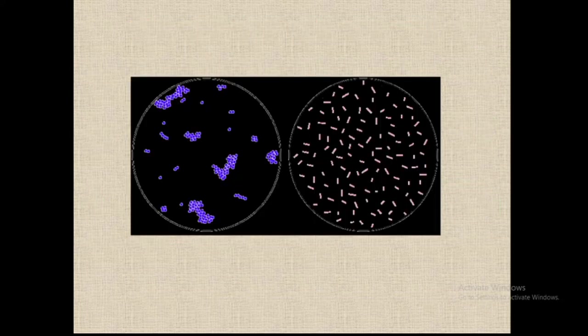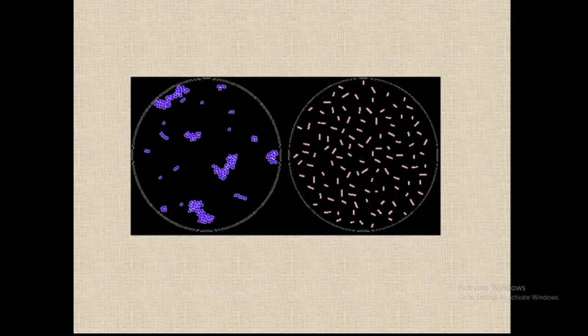You can see how bacteria are observed under the microscope. If methylene blue is used, you will get a blue color. If carbol fuchsin is used, you will get the red color. This whole bacterium is stained using simple staining or monochrome staining.